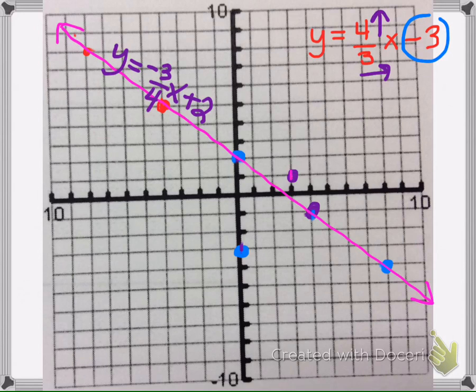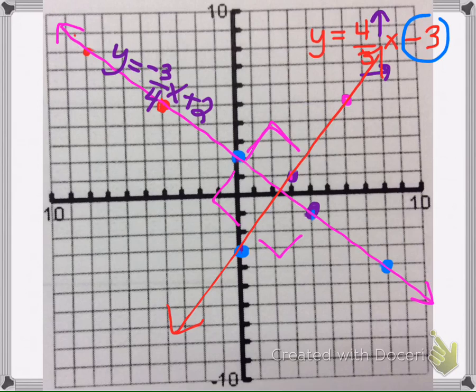And then from there I'm going to go up 4, 1, 2, 3, 4, and then over 3, so right there. And then I connect my points, and then I verify that this does indeed make 4 right angles, so they are perpendicular.